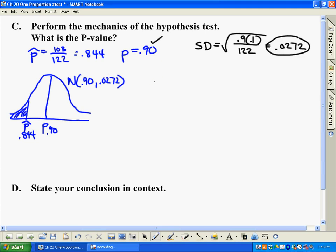And then we do what we've always done, which is calculate a z-score next. So that would be 0.844, which is p-hat, subtract p, and then go ahead and divide by our standard deviation. And when you do that, you should get something around negative 2.059, depending on how you round it.